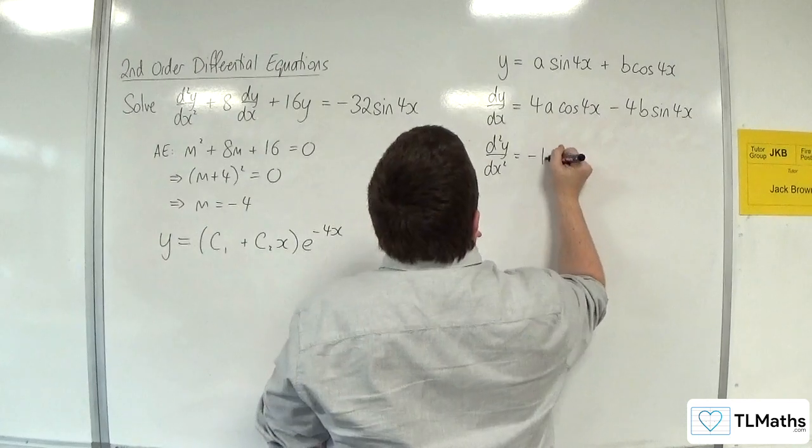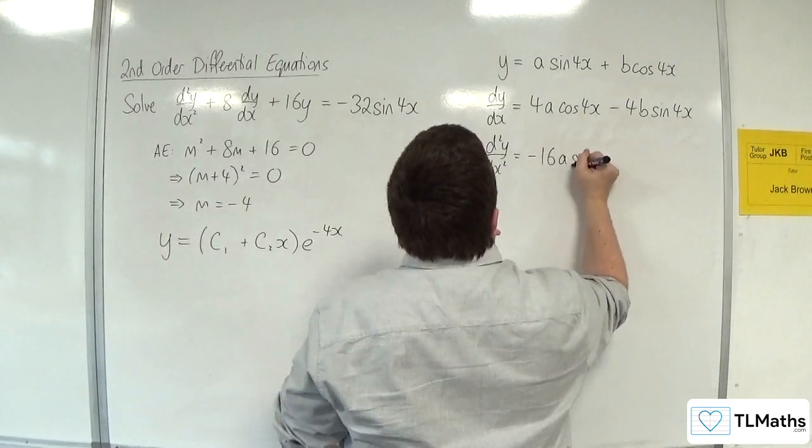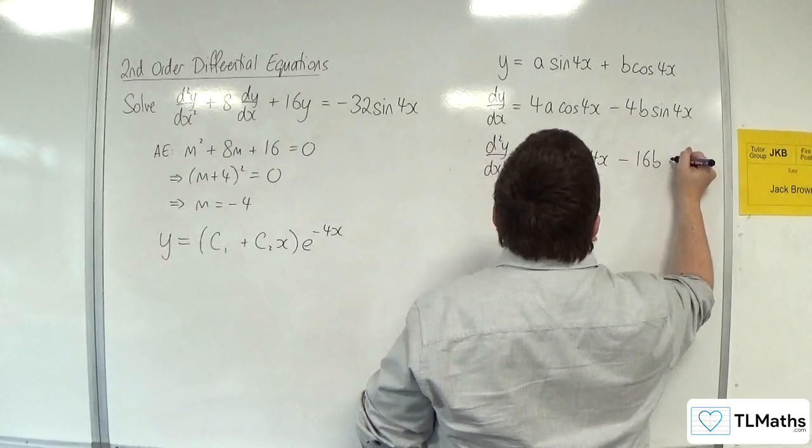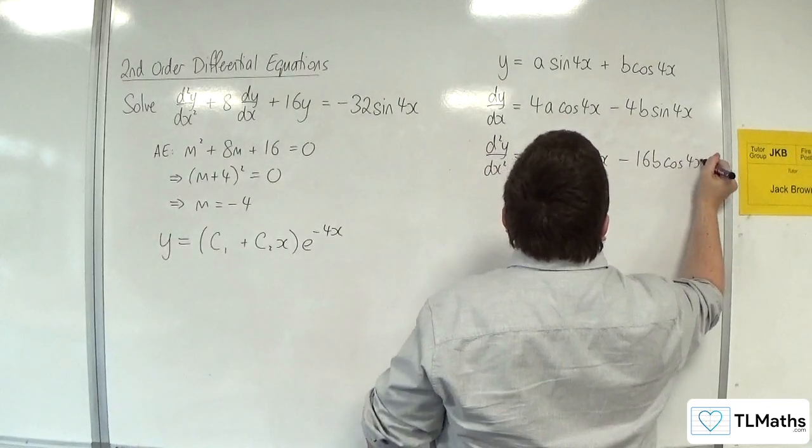Then d²y/dx² would be equal to -16a sin(4x) - 16b cos(4x).